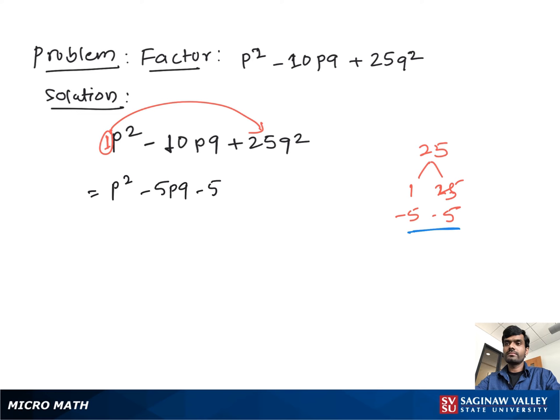You can write P square minus 5PQ minus 5PQ plus 25Q square.